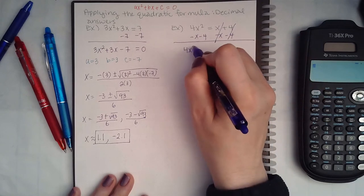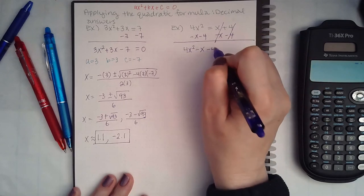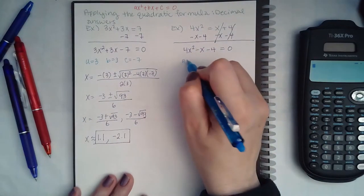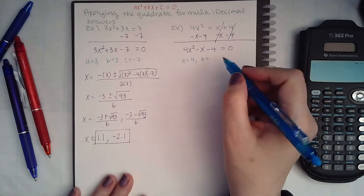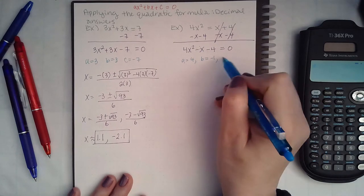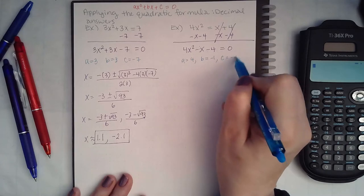We end up with 4x squared minus x minus 4 equals zero, which means my a value is equal to 4, my b value is a little bit tricky here, it is a negative 1, and my c value is negative 4.